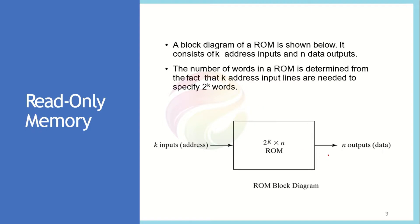The only data lines available are for the outputs. Say we have a 2k × n memory, where 2k — meaning 2 to the power k — represents the number of addresses or memory locations, while n is the word size or the width of each location. For the 2k locations we need k different address lines, and according to these address lines 2k different locations will be accessed, each location having n-bit data.